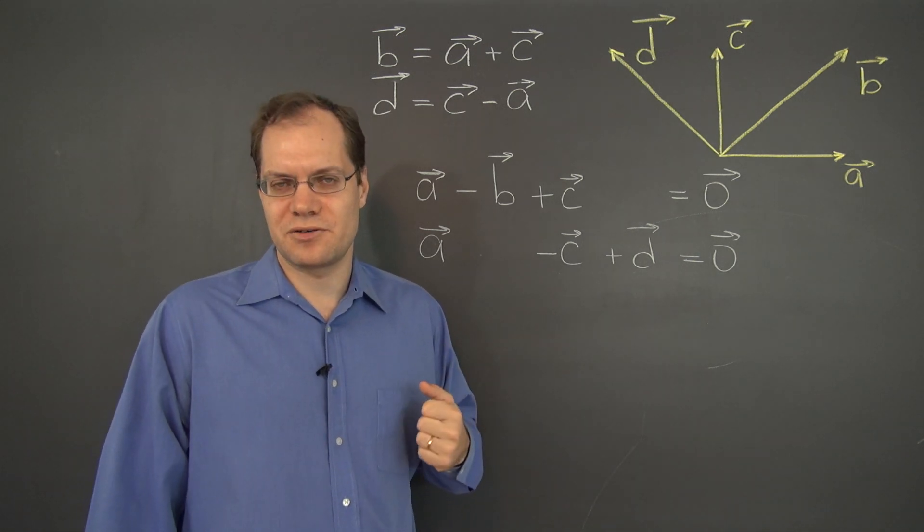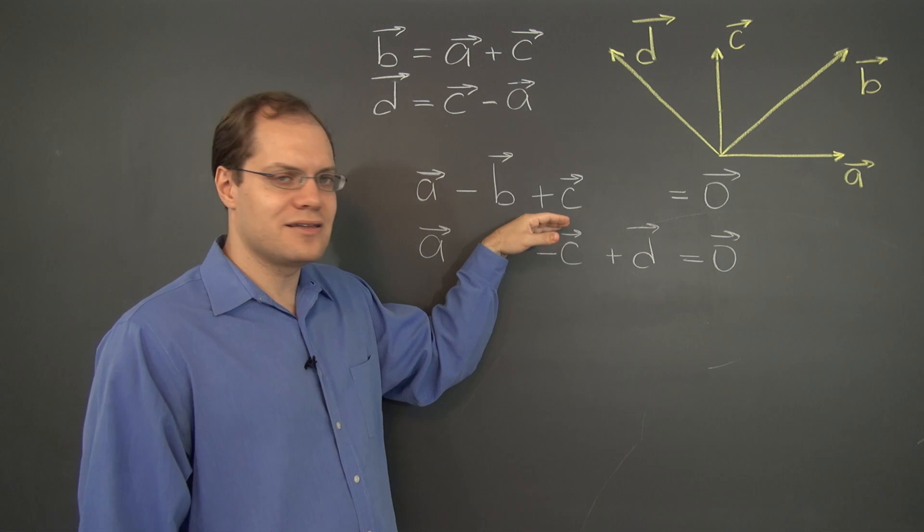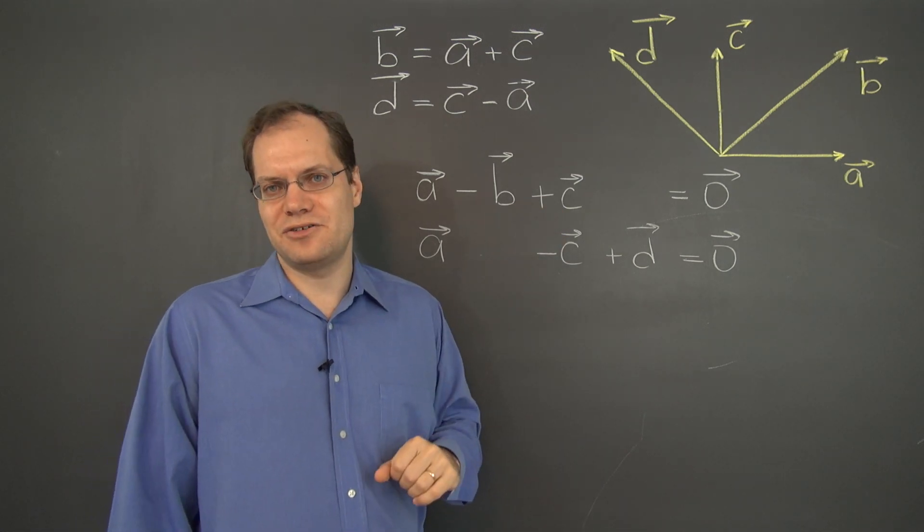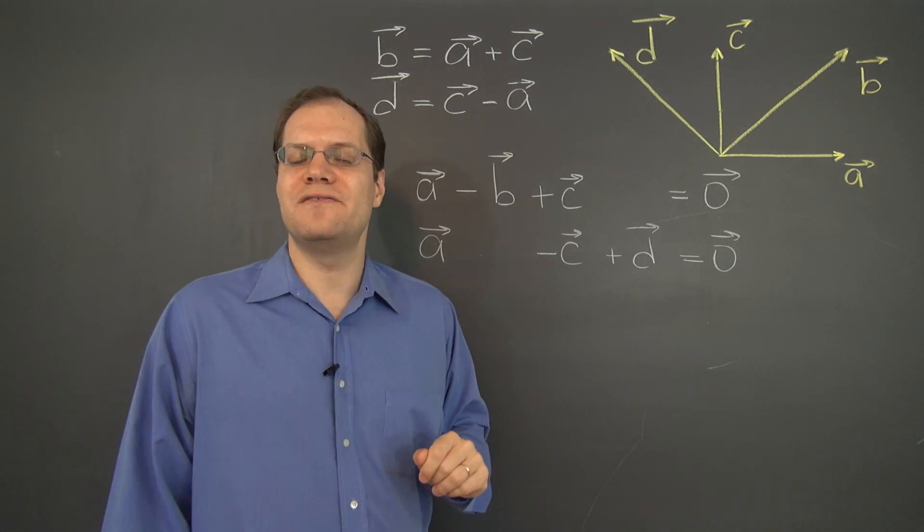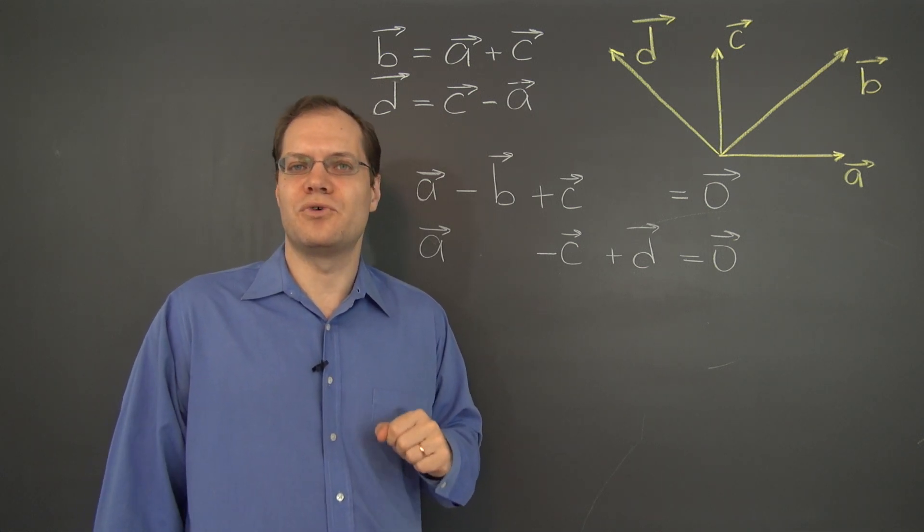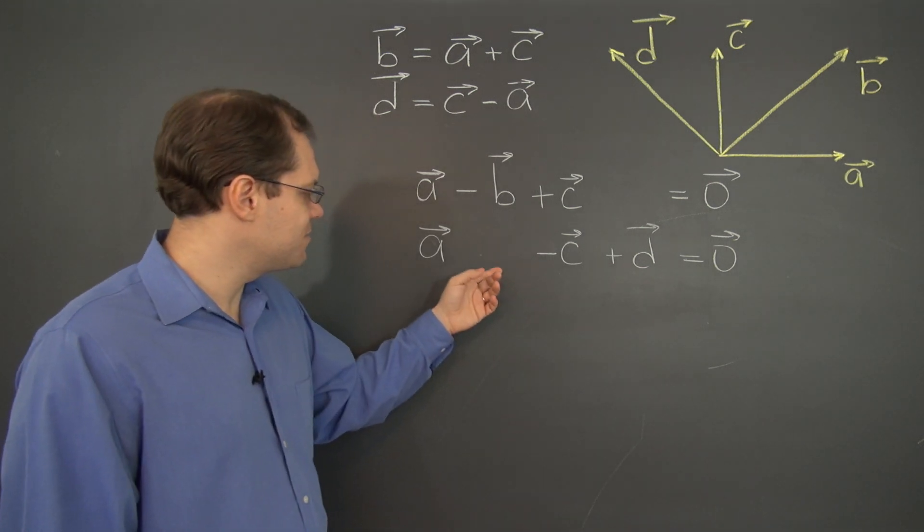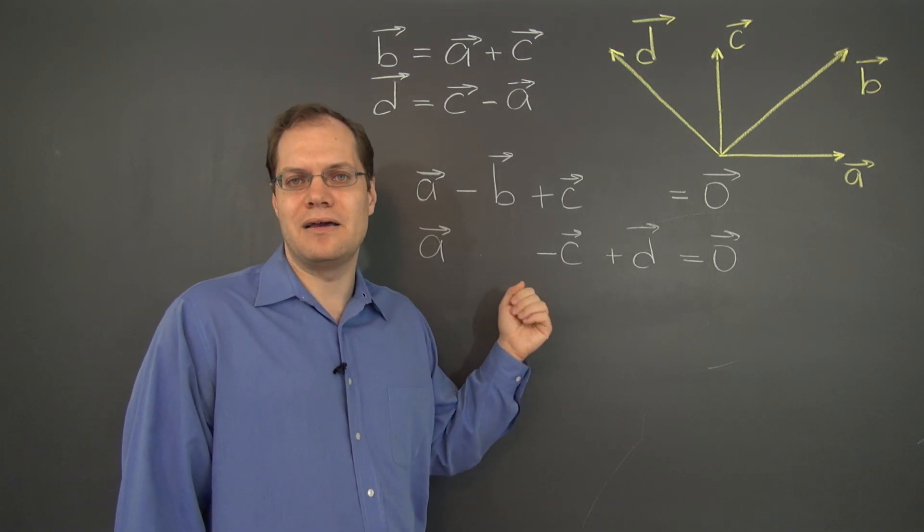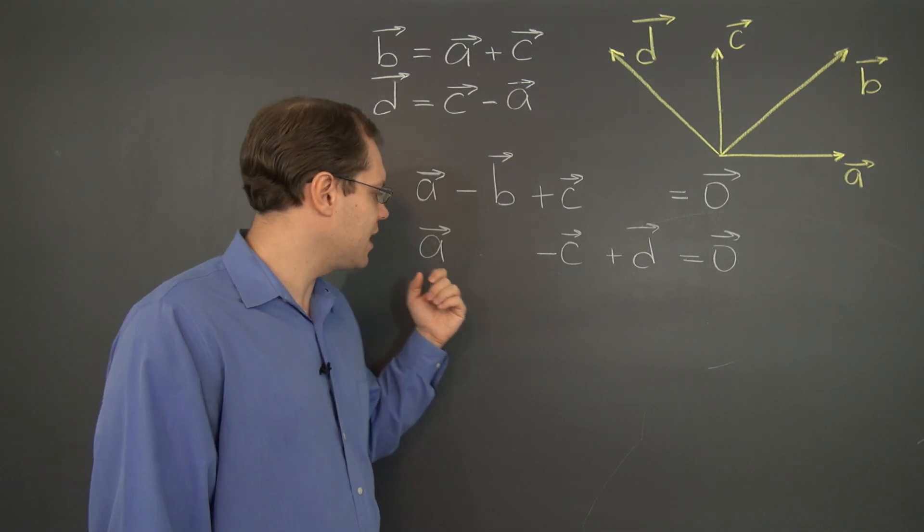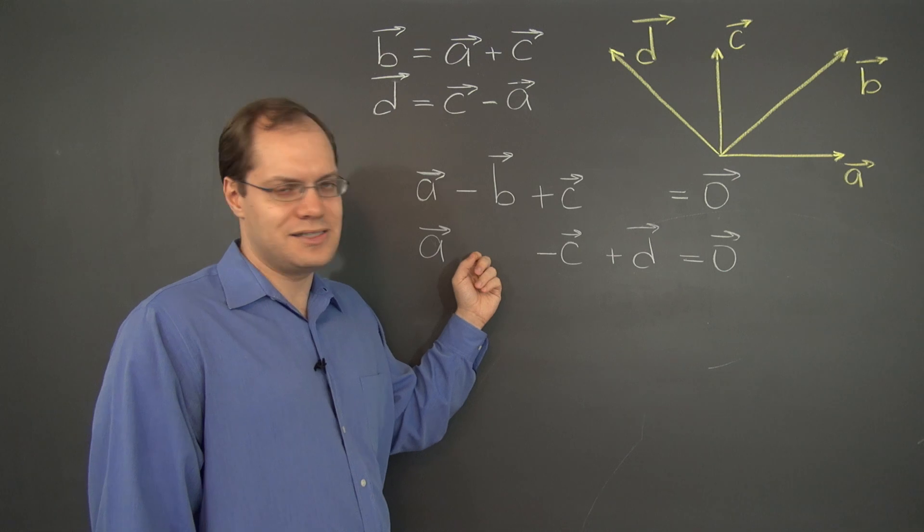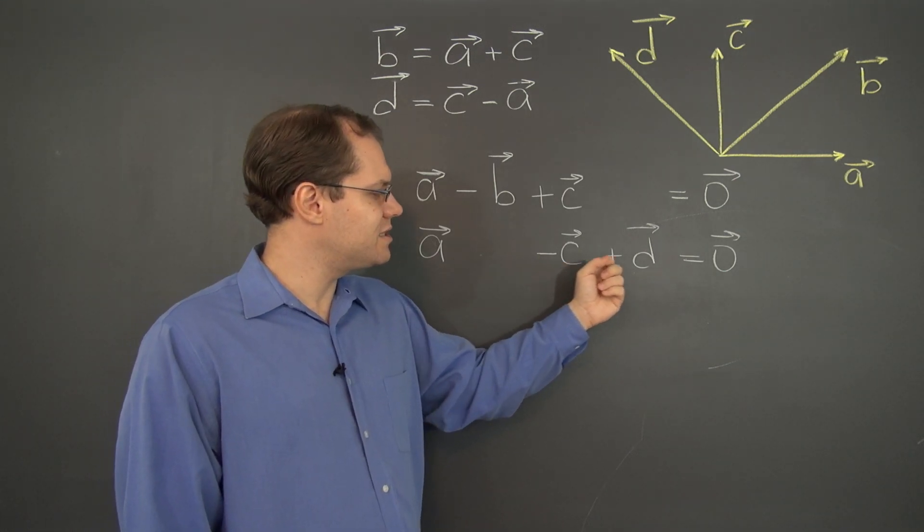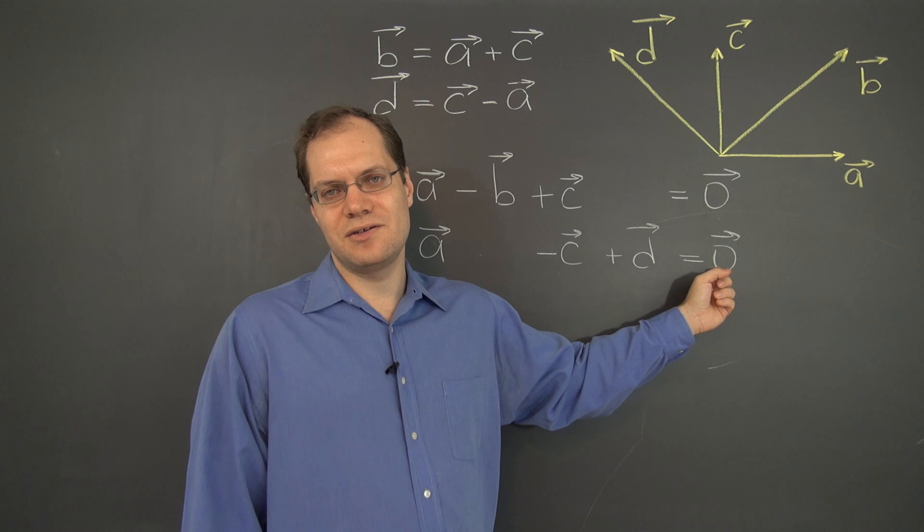And of course, that relationship is correct. We can see it algebraically, and we can also check it geometrically, and it'll work perfectly fine. This is algebra and geometry working together. Let's try the same thing with this relationship, multiplied by 7. And we would have 7a plus 0b minus 7c plus 7d equals, once again, zero.